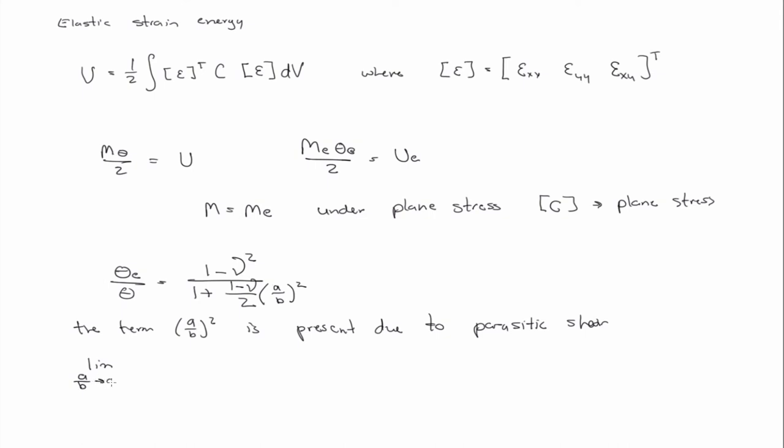So if we take the limit as the ratio of A over B goes to infinity, that goes to zero. Therefore, this equals zero as A over B goes to infinity.